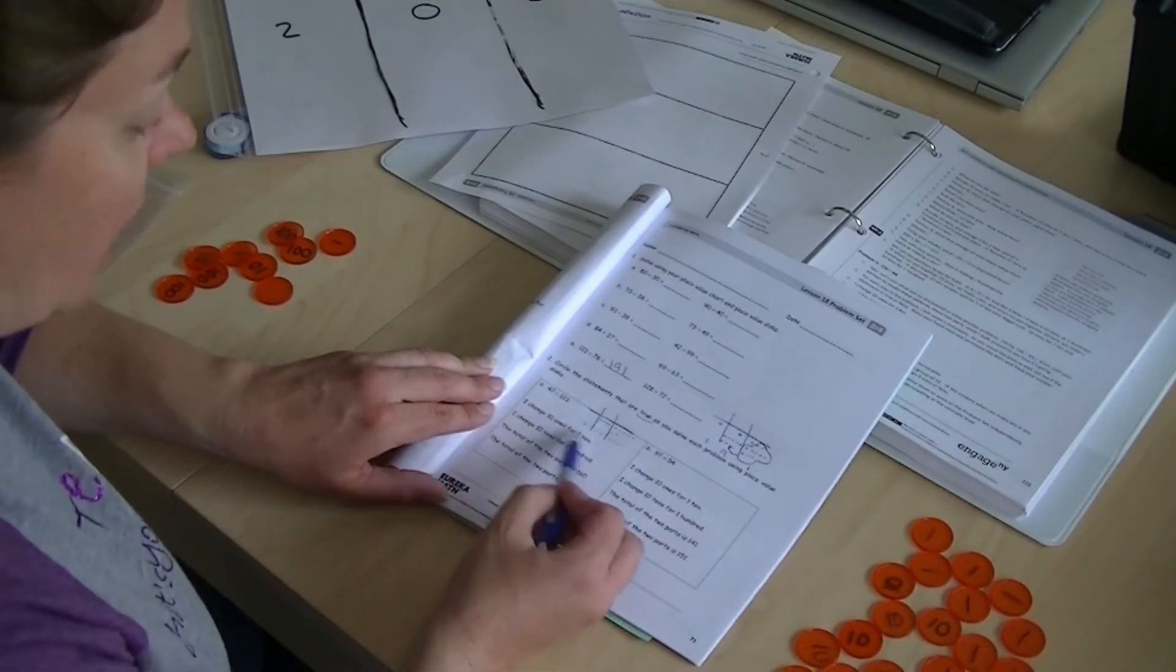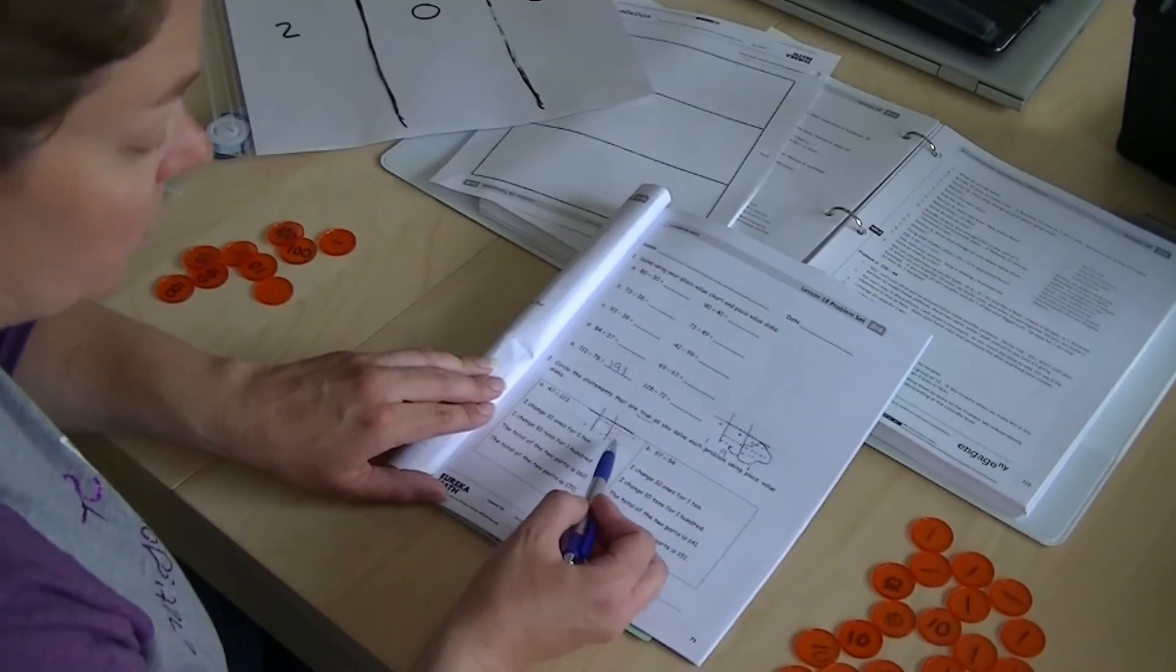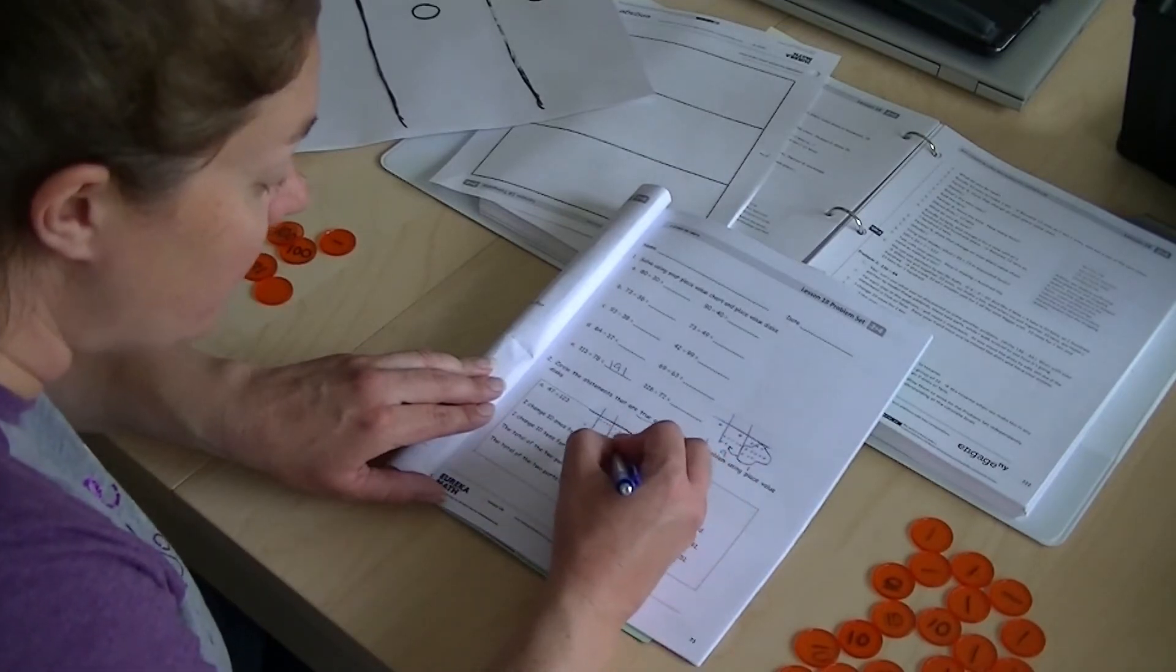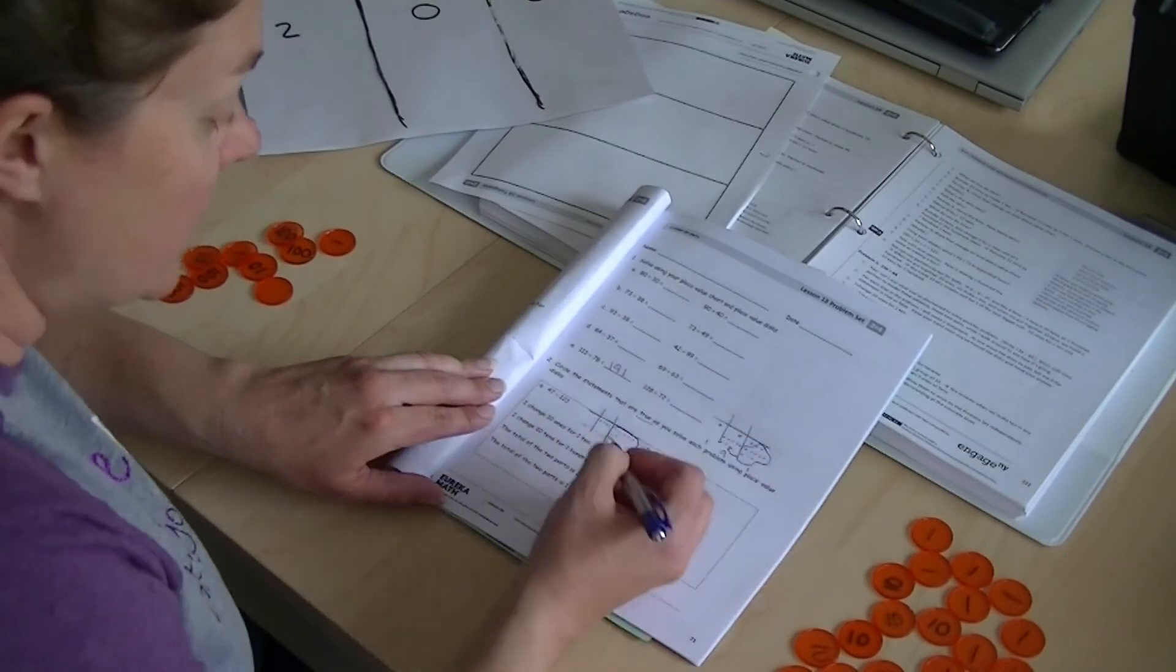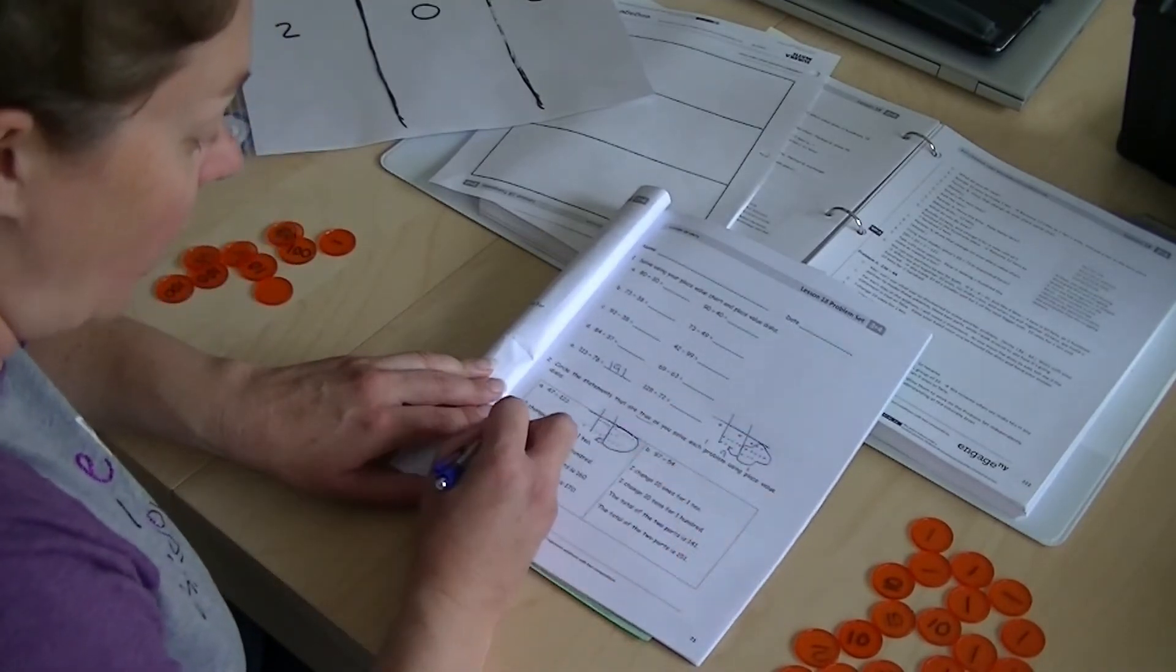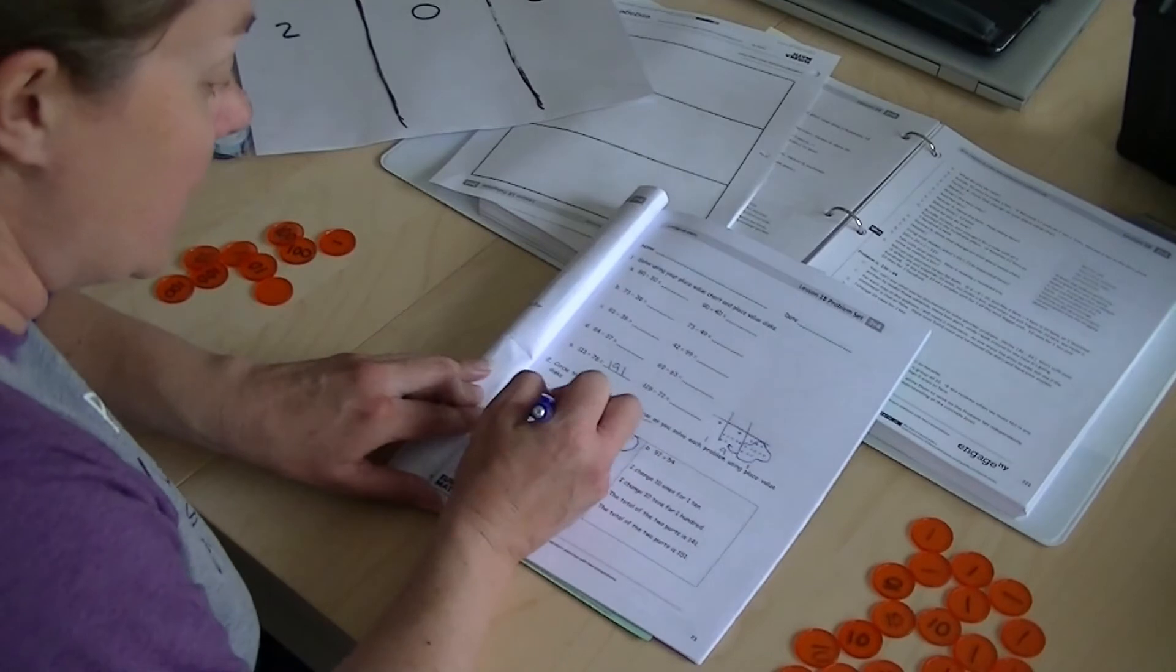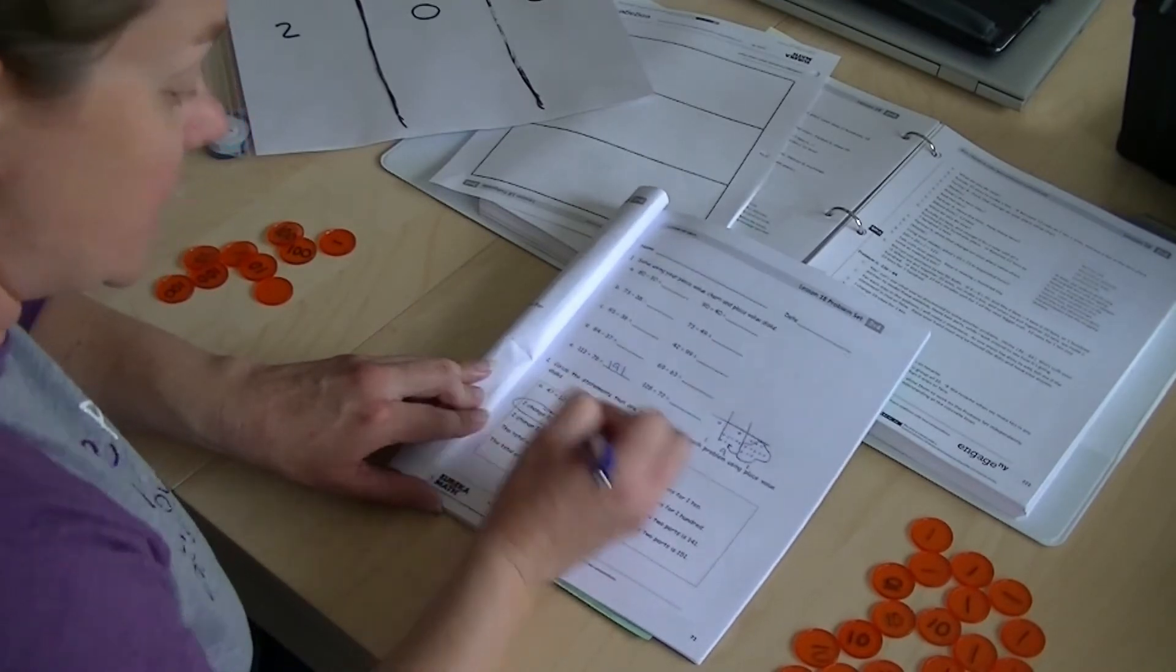All right. So I changed 10 ones for one 10. Well, let's see if we need to do that. I have 7, 8, 9, 10. Look. There's one bundle that becomes a 10. I changed 10 ones for one 10. Yes, that's something that we did.